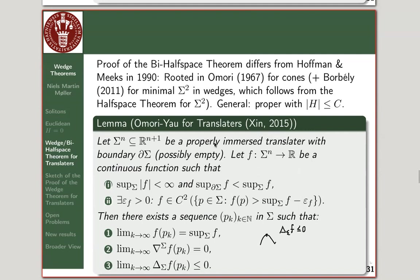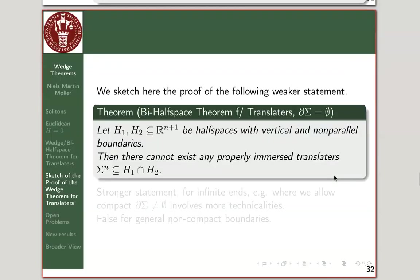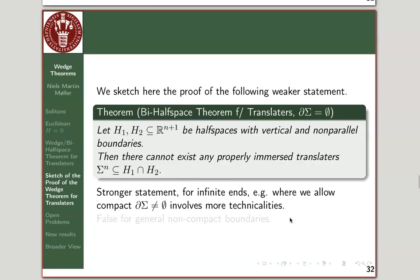Here is a sketch of the proof of a slightly weaker statement — no boundary assumed. We need to show that if you have vertical non-parallel half spaces, then you cannot have a properly immersed translator sitting inside this wedge-shaped region. A little more work is needed for the compact boundary case, and I already gave the counterexample in the last lecture for why it doesn't work for non-compact boundaries — the example was a wedge and then half a Reaper cylinder.